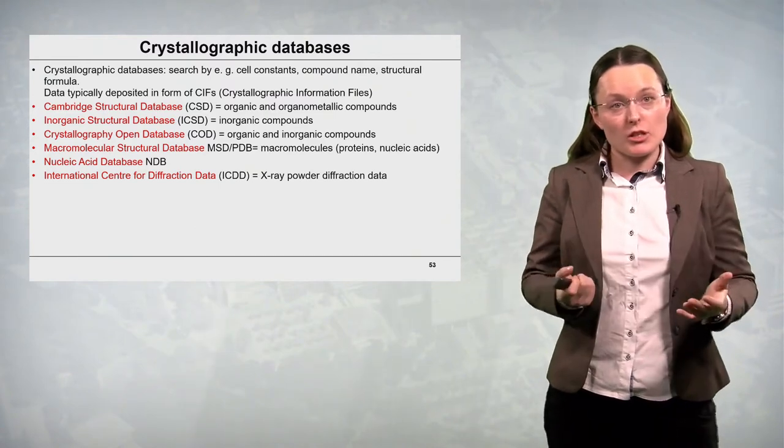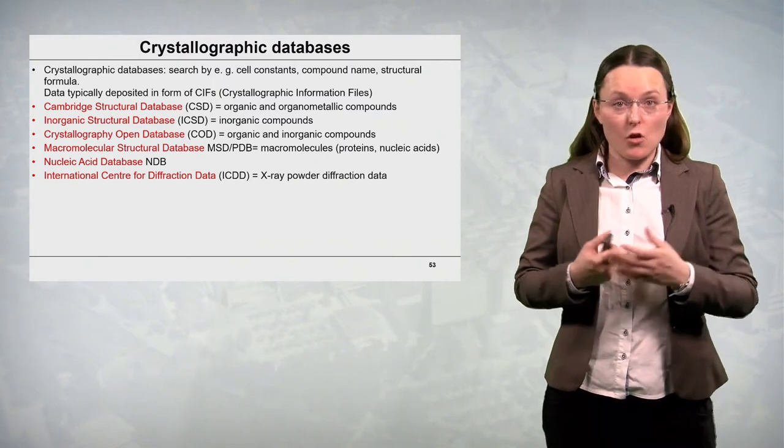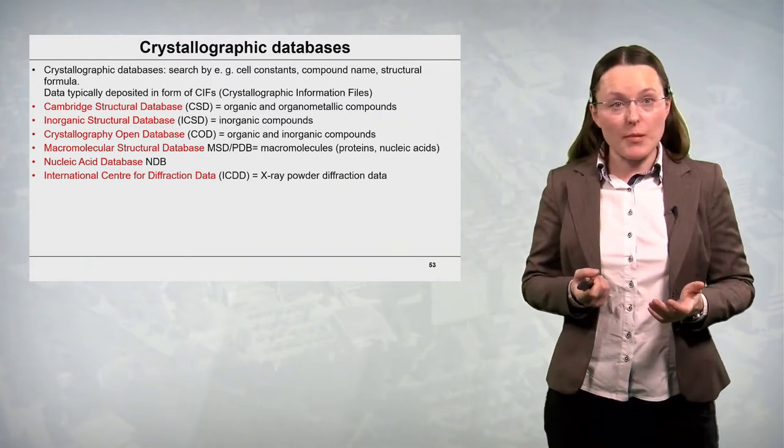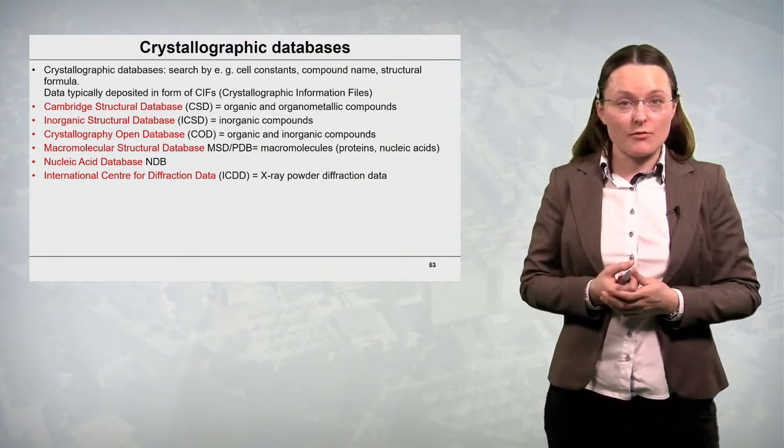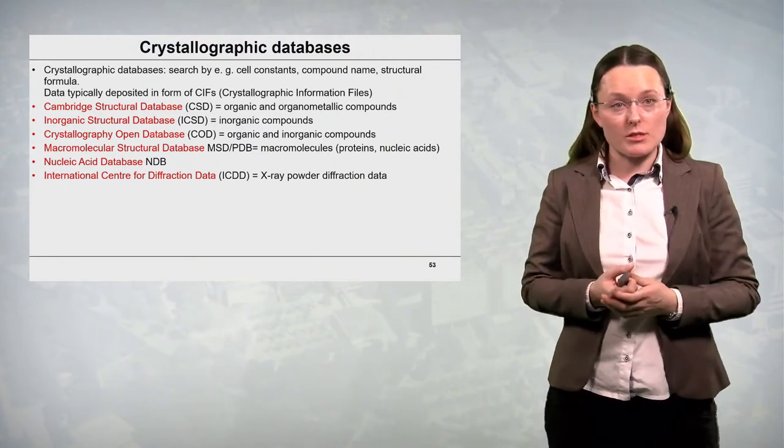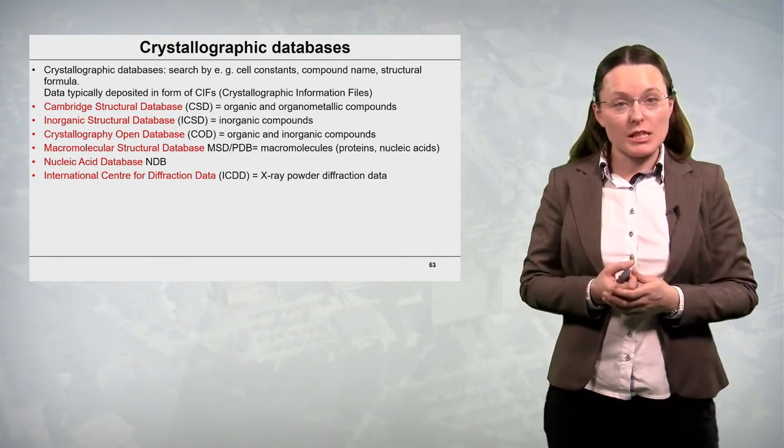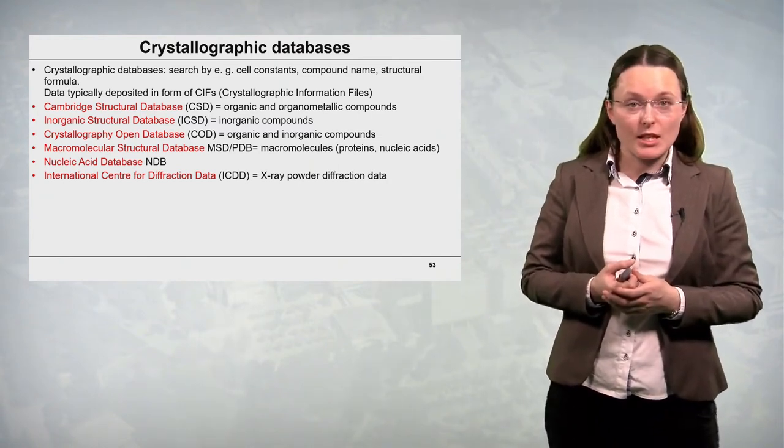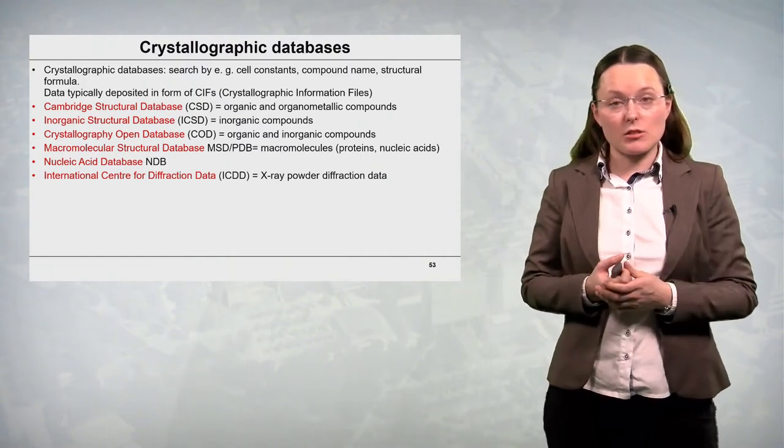And the most important crystallographic databases are shown on the slide. So it's the Cambridge Structural Database CSD with data for organic and organometallic compounds. Inorganic structural database ICSD with data for inorganic compounds. Crystallography open database COD is an open access initiative and contains organic and inorganic compounds data.